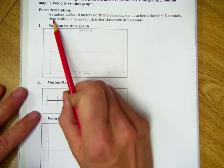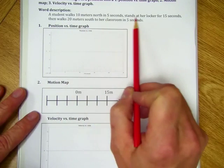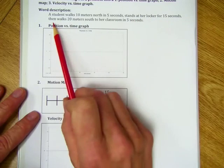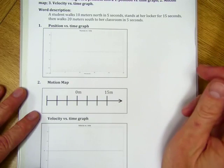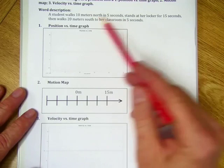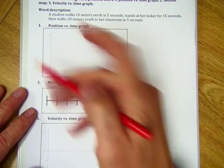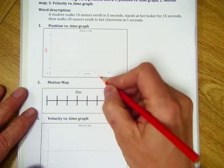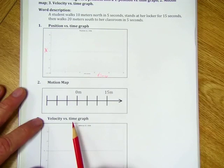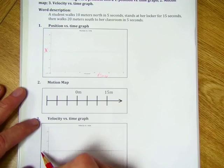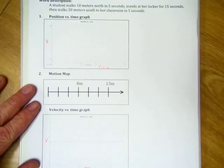So we have a word description. A student walks 10 meters north in 5 seconds, stands at her locker for 15 seconds, then walks 20 meters south to her classroom in 5 seconds. We're going to take this written description and turn it into a position versus time graph, a motion map, and a velocity versus time graph down here on the bottom.